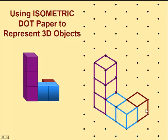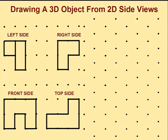And there we have our three-dimensional object represented nicely on a two-dimensional surface. This isometric dot paper allows us an opportunity to take the two-dimensional side views of an object and to draw the object as it actually appears in three dimensions.